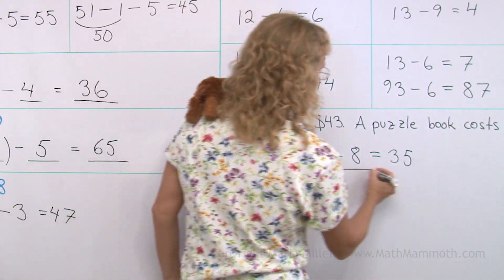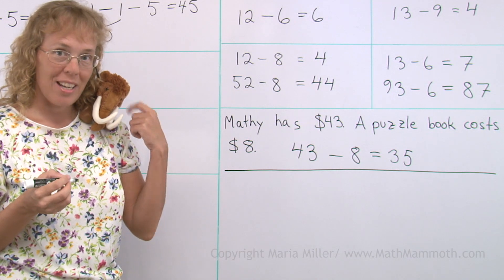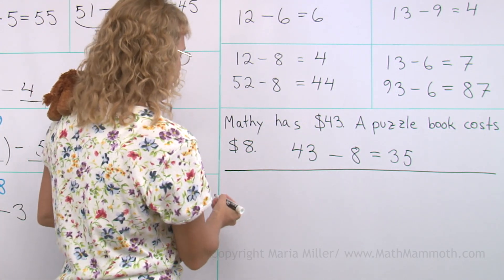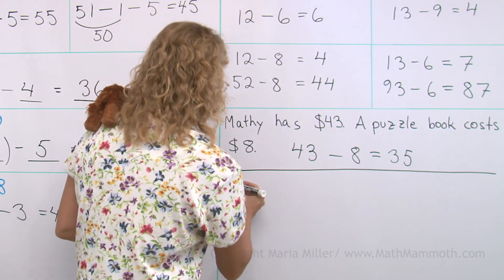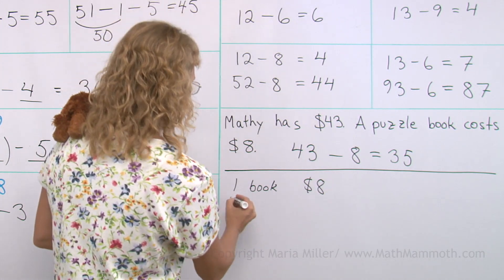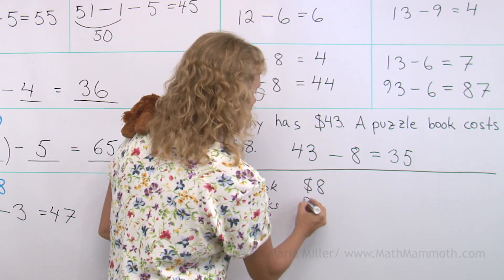But let's think about the other problem too that Mathie had. How many books can he buy? If he wants to buy many, as many as he can. And I'm gonna write here a table. Let's see, one book is $8. Two books, double that, so we get 16, right?